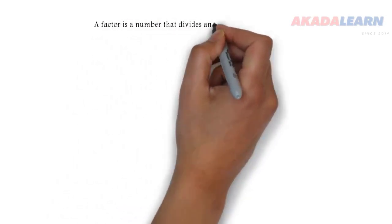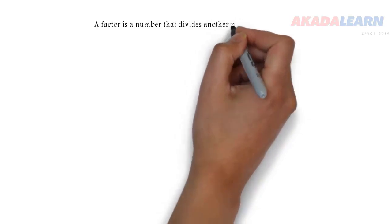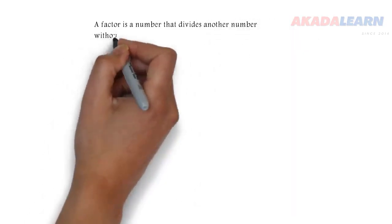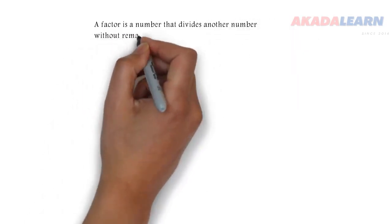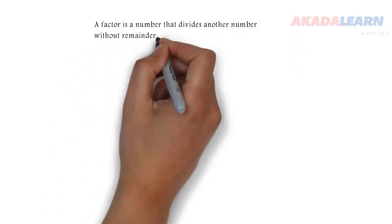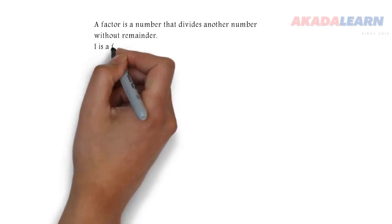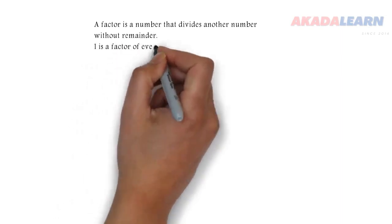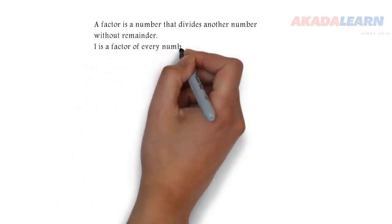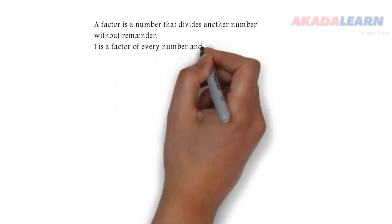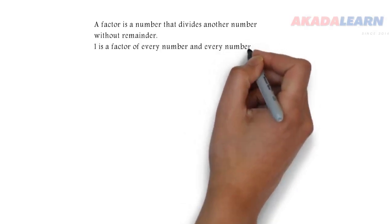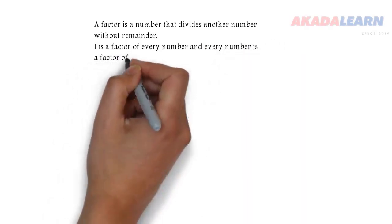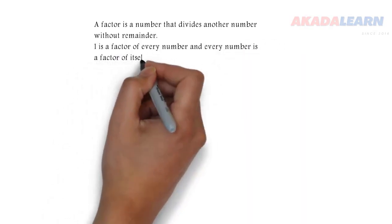First we'll start with factor. A factor is a number that divides another number without remainder. 1 is a factor of every number and every number is a factor of itself.